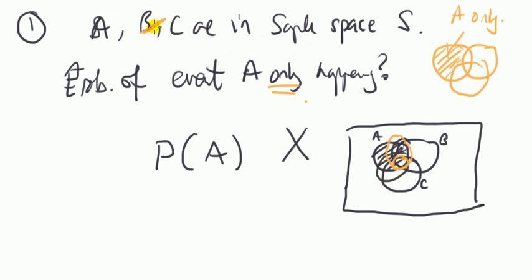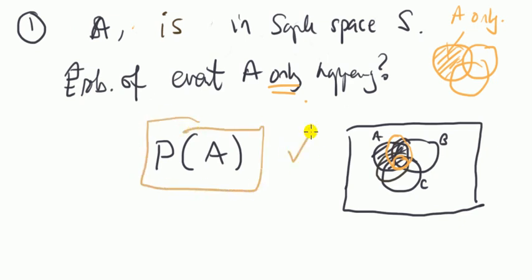But how about if I scrubbed out, remove the set B and remove the set C as well. So I'll just say A is in sample space S. Now what? Now, would this answer, probability of A, be correct? Well, it would be. Because you think about the picture. This whole box is S. This whole circle is A. If we do probability of A now, that's exactly A only, isn't it?